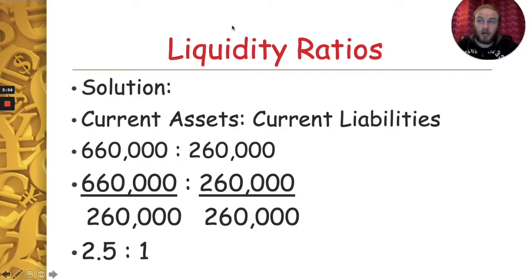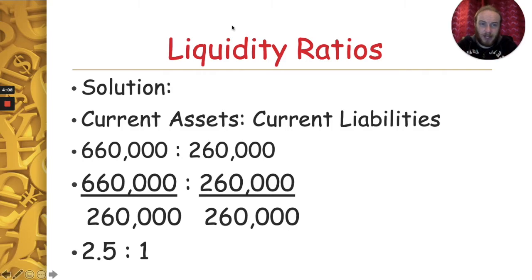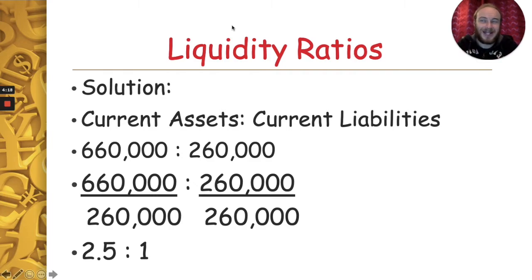Now, what are current assets and what are current liabilities? An asset is something you own, and 'current' - think of current expenditure - refers to day-to-day. So current assets are things you own on a day-to-day basis, like what's in your bank account or the cash you have. Current liabilities - a liability is something you owe. Current again means day-to-day, so these are bills you have to pay regularly: your rent or mortgage, your wages, your light and heat - those types of things. So your day-to-day bills you owe versus the day-to-day money you have.